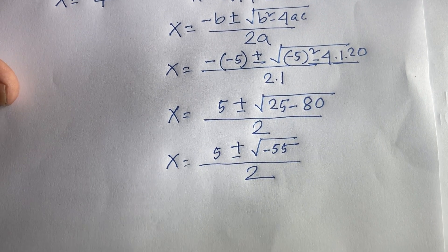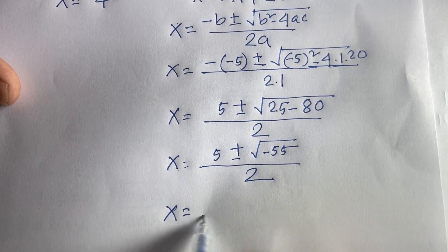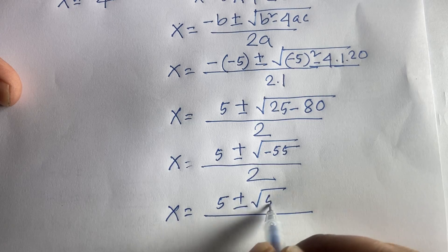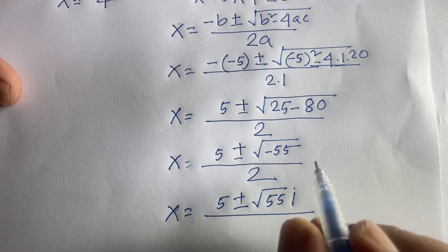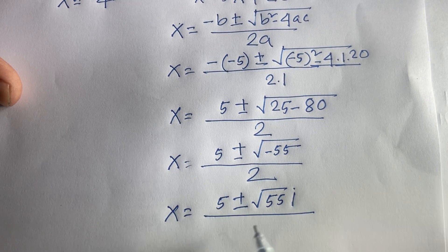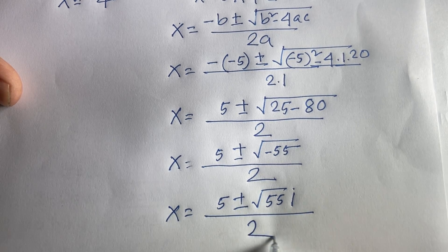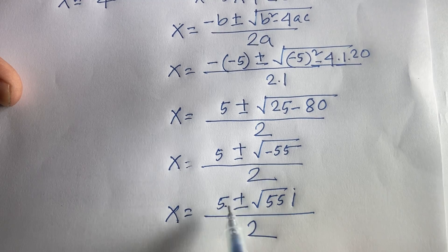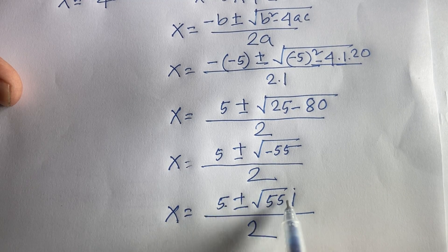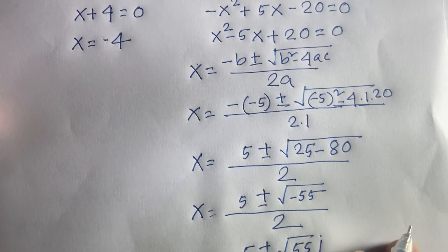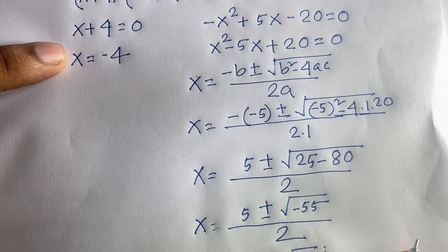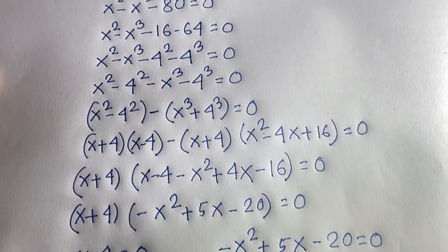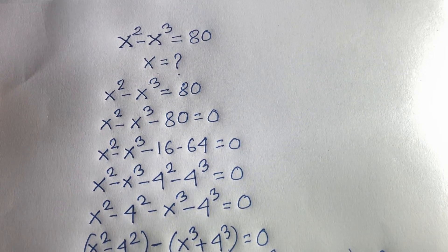So x equals 5 plus or minus i times square root of 55, all over 2 — since square root of minus 1 equals i, a complex number. Our final answers are x equals (5 ± i√55) / 2 and x equals minus 4. Thank you all — if you enjoy this video please subscribe for more interesting videos. Goodbye, take care!